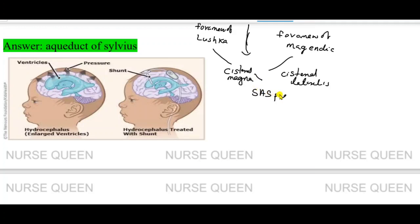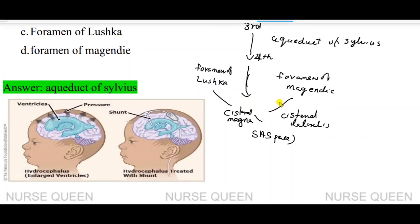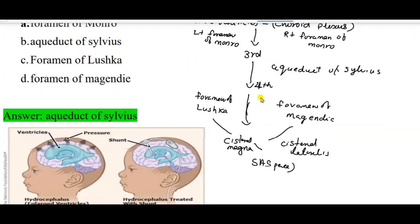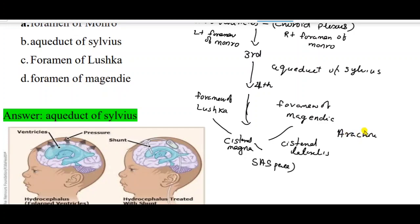Next step: CSF is absorbed in the arachnoid space. Finally, it is absorbed into the dural venous sinuses by the arachnoid villi.